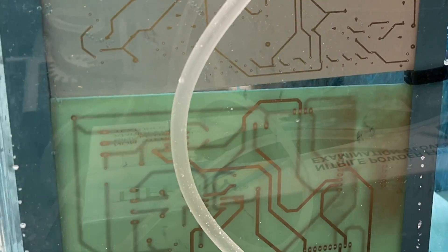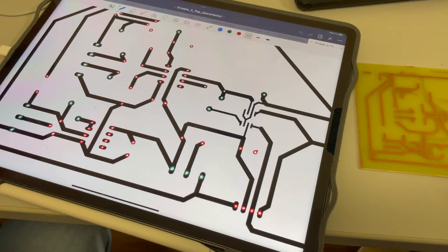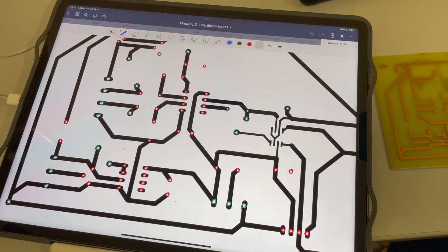After cleaning the circuit board with alcohol to remove the remaining photosensitive coating on the circuits itself it's time for drilling.